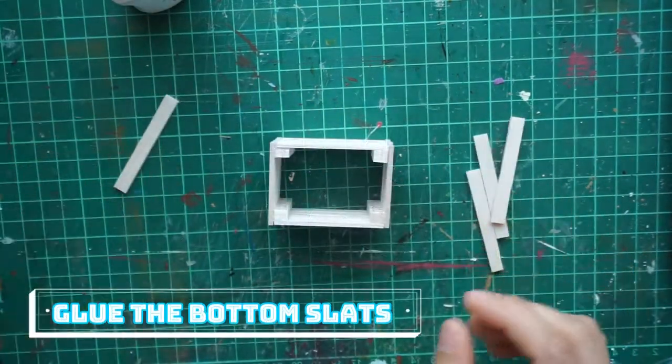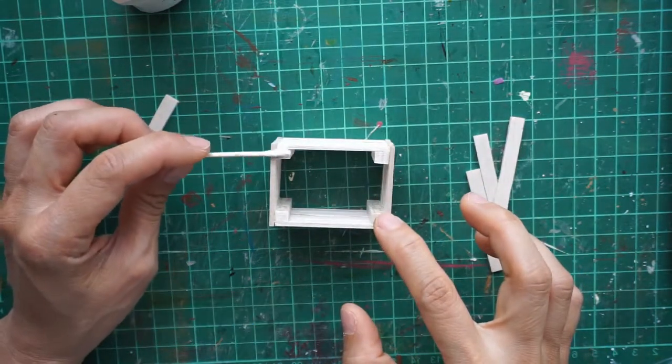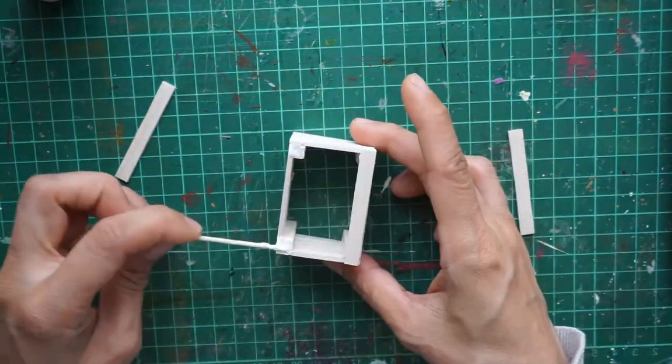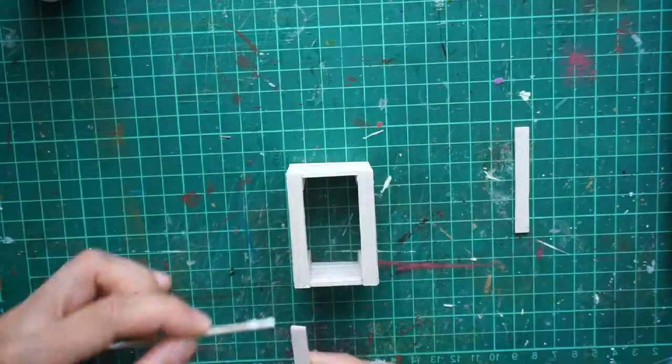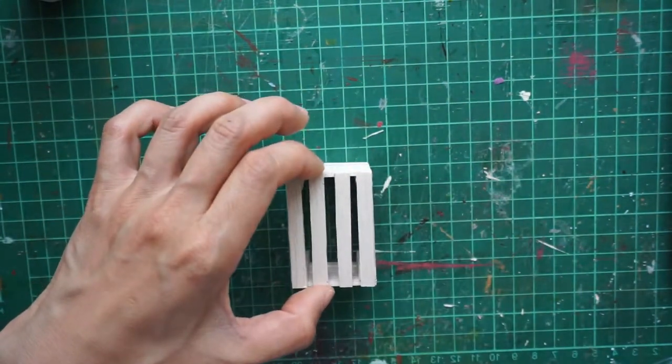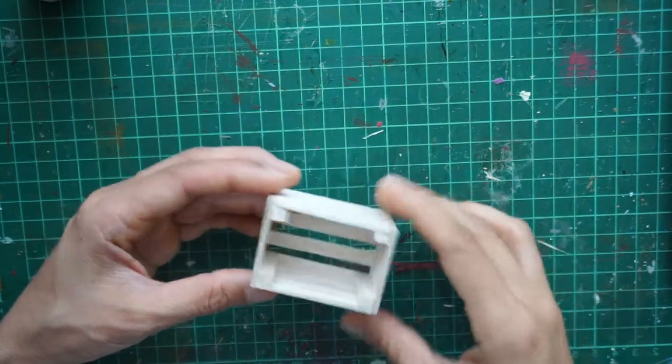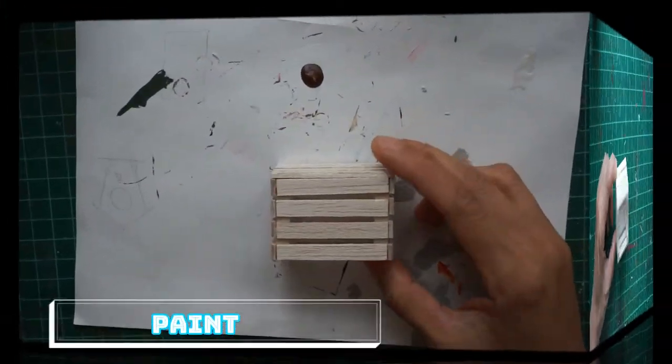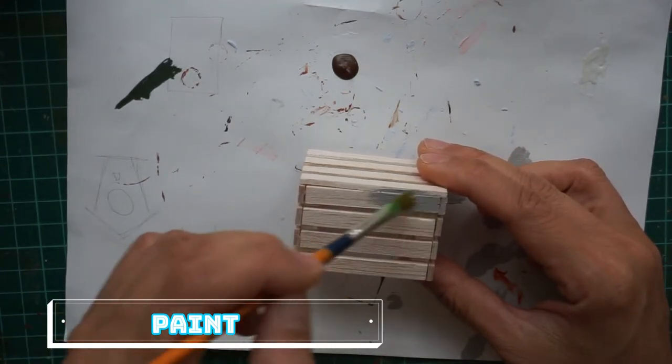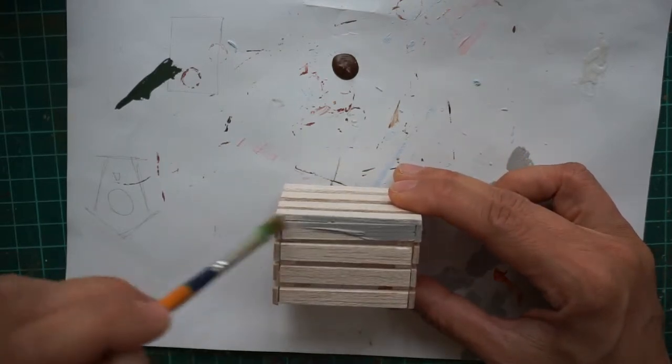And then lastly, glue the bottom slats. Then finish the crate by painting it with your favorite color, or you can simply varnish it and have the natural color.